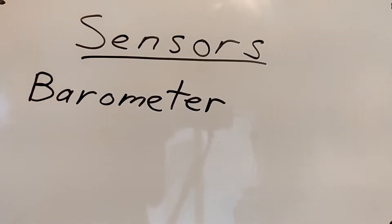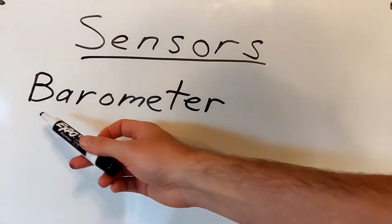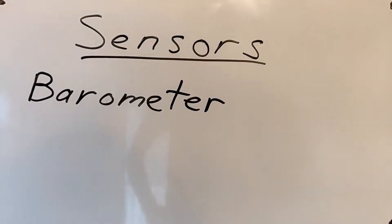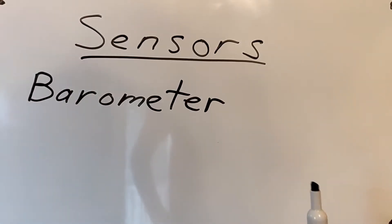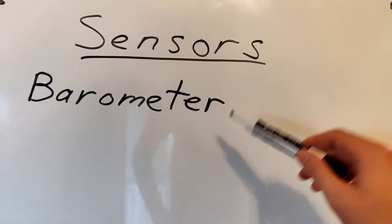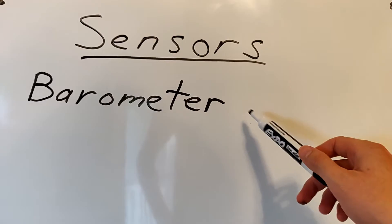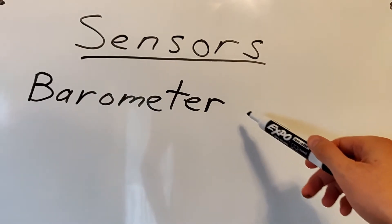Barometer is the next sensor. A bar is a unit of atmospheric pressure so this measures atmospheric pressure. Since atmospheric pressure decreases with an increase in altitude, the barometer is actually used to tell us the altitude of our quadcopter.